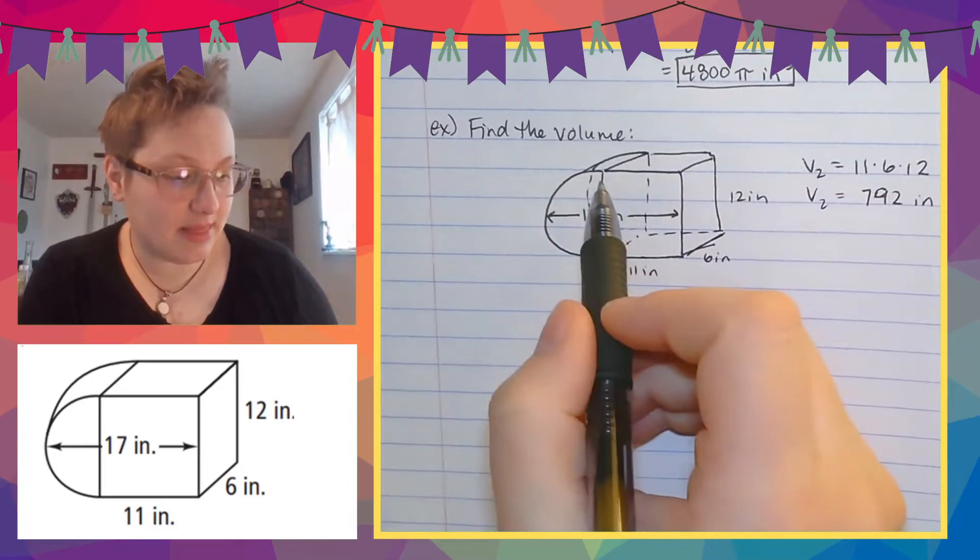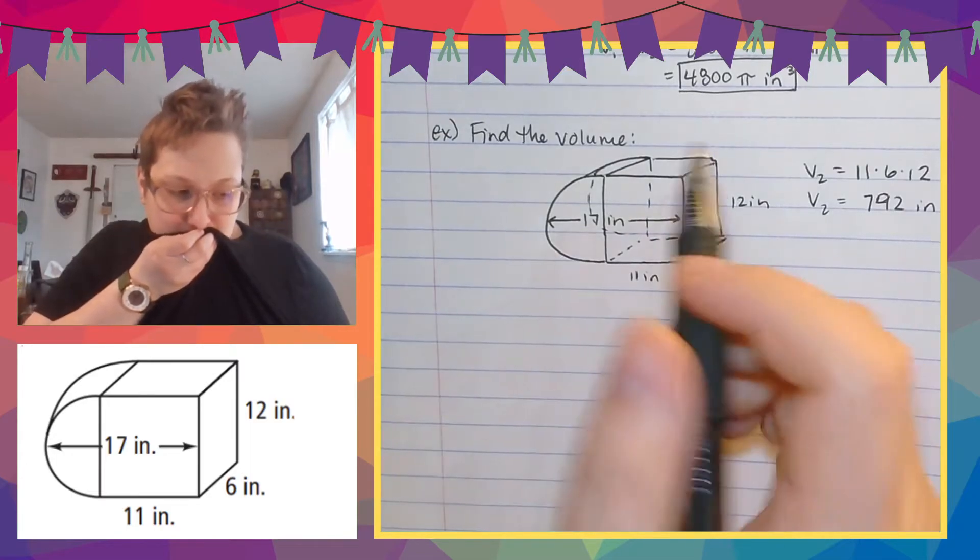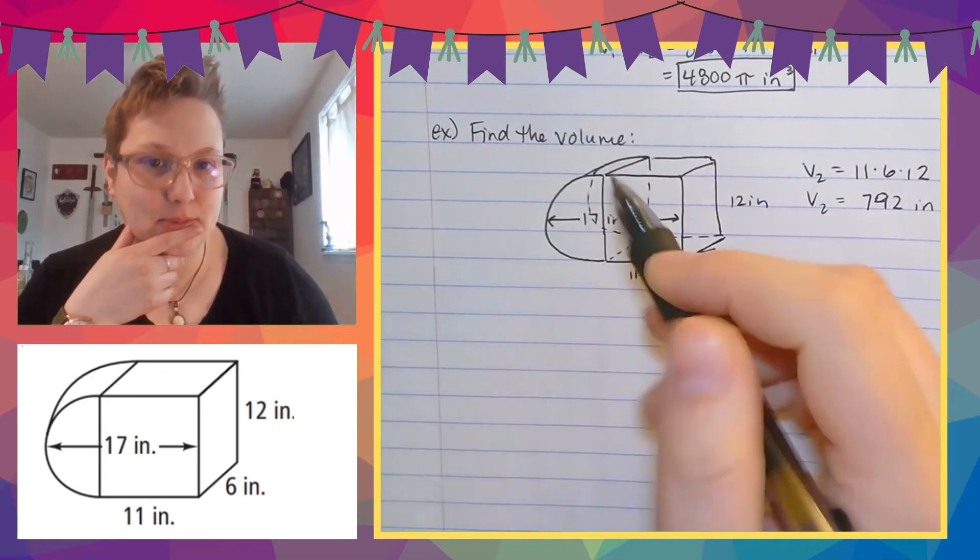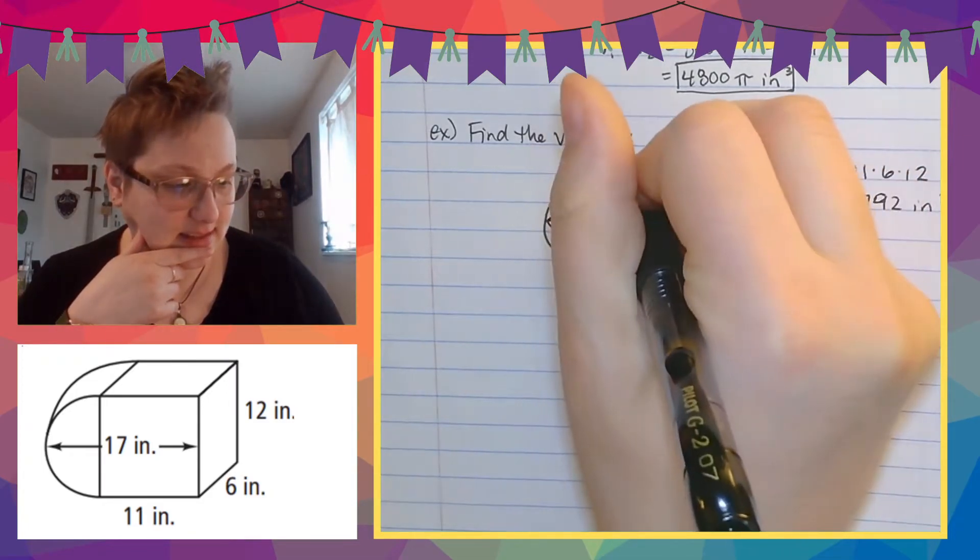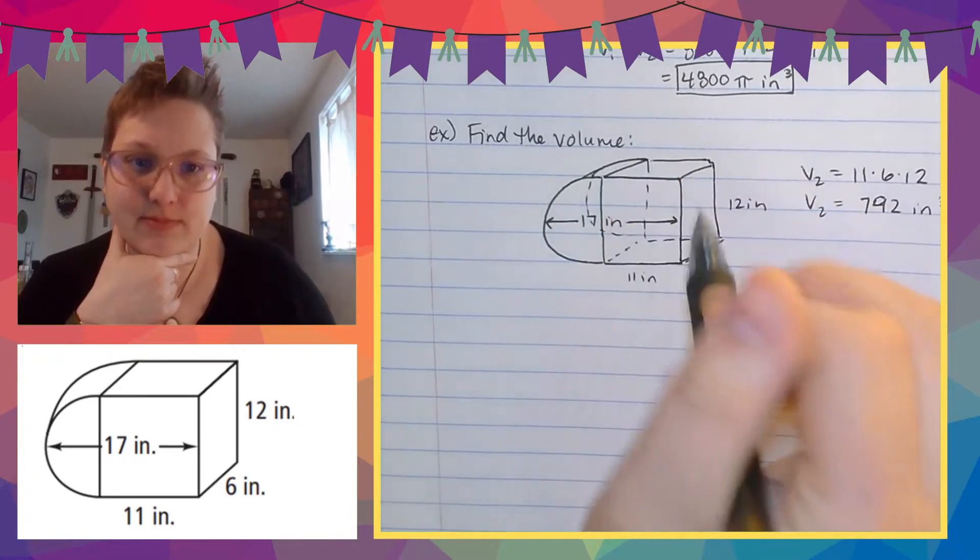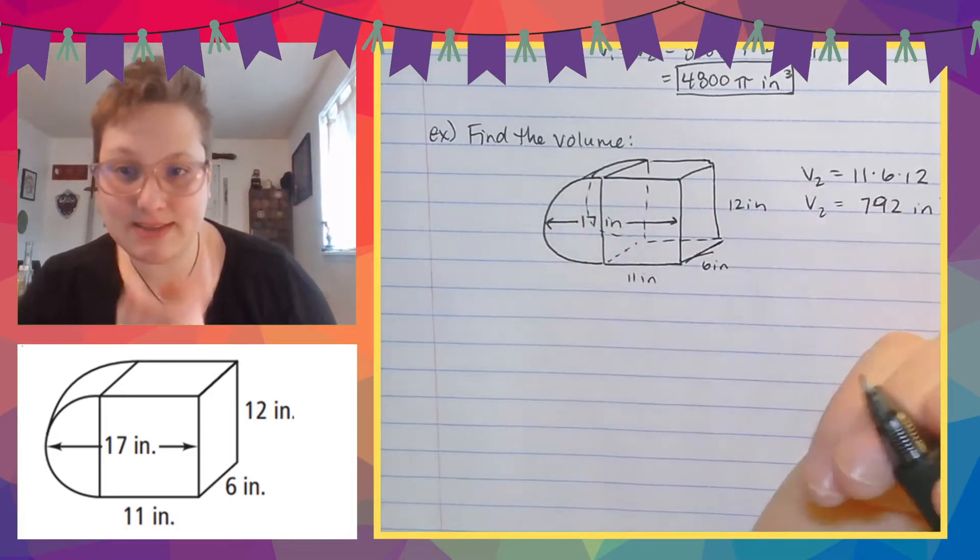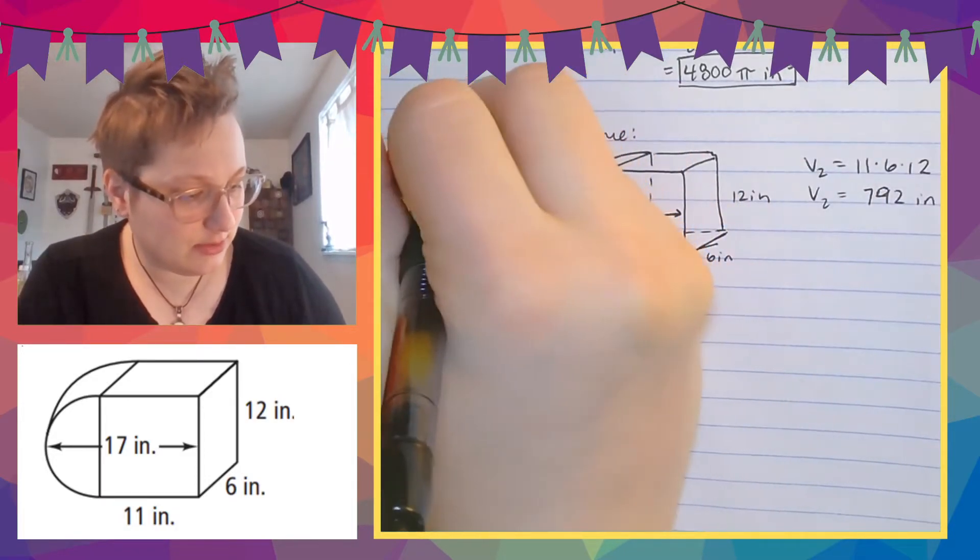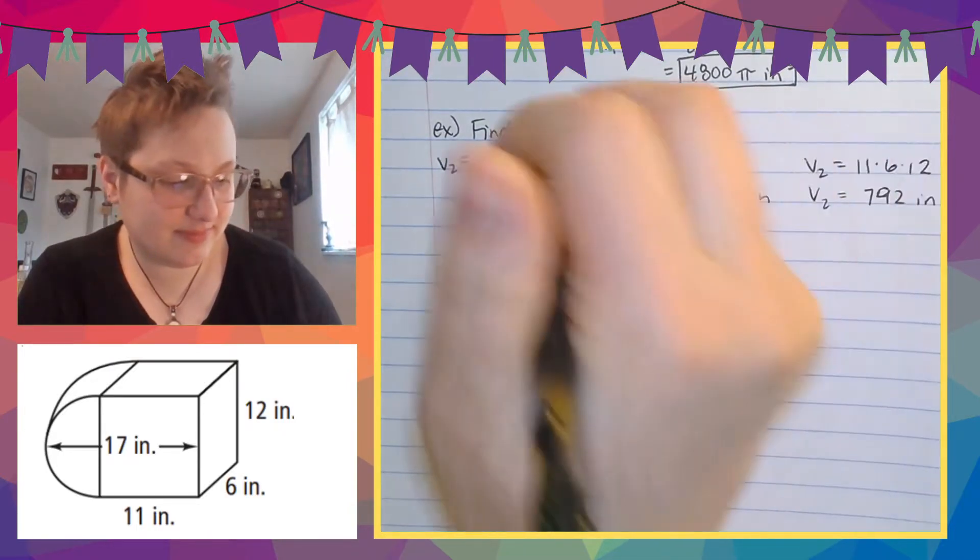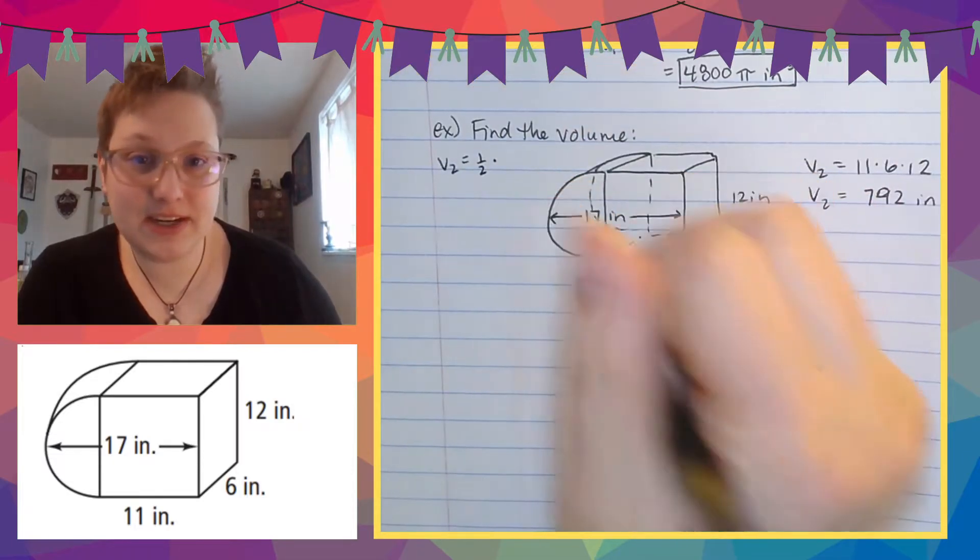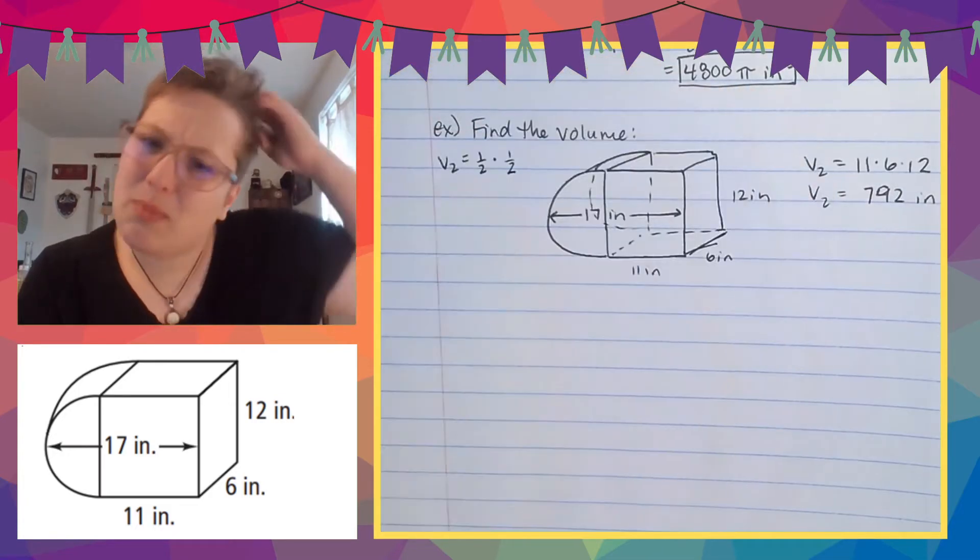Now over here, remember that cylinders have the same base and the same height. So if I can find the area of this base and then multiply it by the height, which would be six, because it's the same. Like if this is six, then this is six. These are the same. So I need to find the area of this semicircle and then I can multiply it by six. So volume two is going to be the area of base. So one half of the area of this circle, which is one half base times height. No, pi r squared.